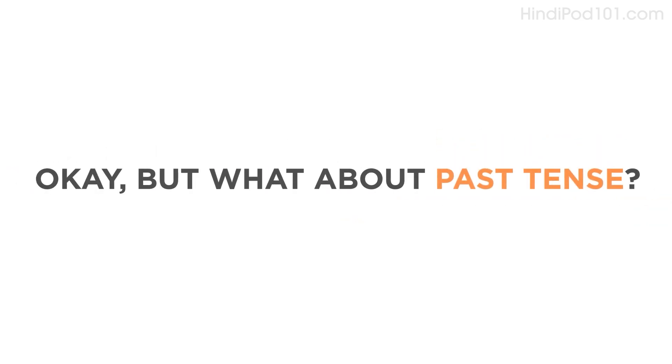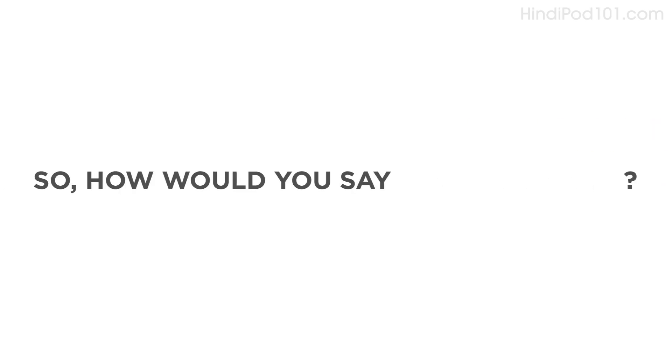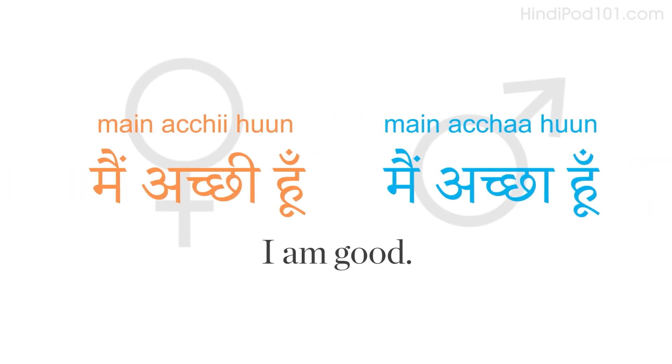Okay, but what about past tense? 'Was' becomes 'tha', or 'the', or 'thi'. So, how would you say, 'how are you'? 'Aap kaise hain', or 'aap kaisi hain'. And how would you answer that? 'Main achha hoon' if you are male. Or, 'main achhi hoon' if you are female.